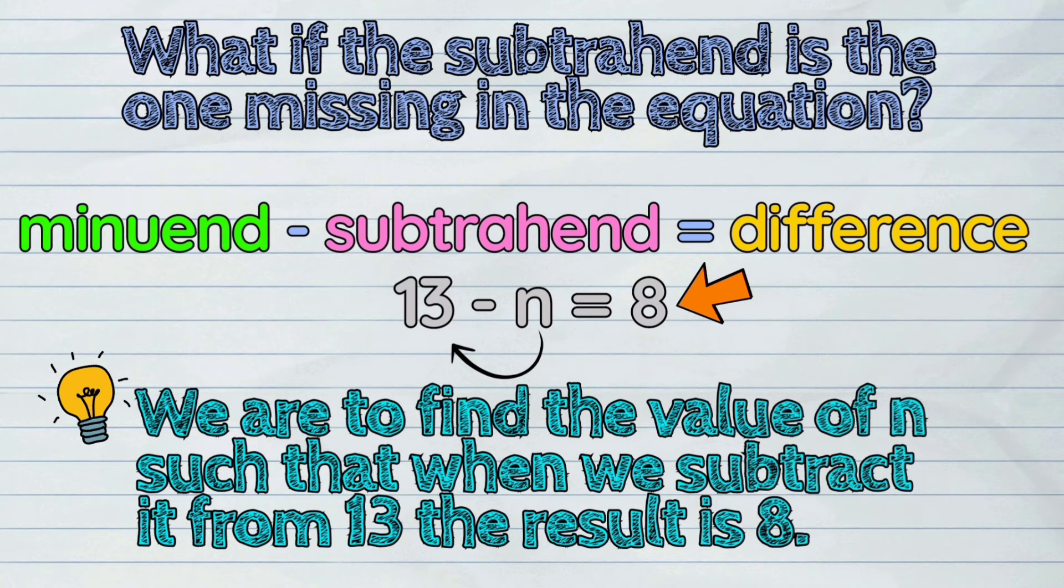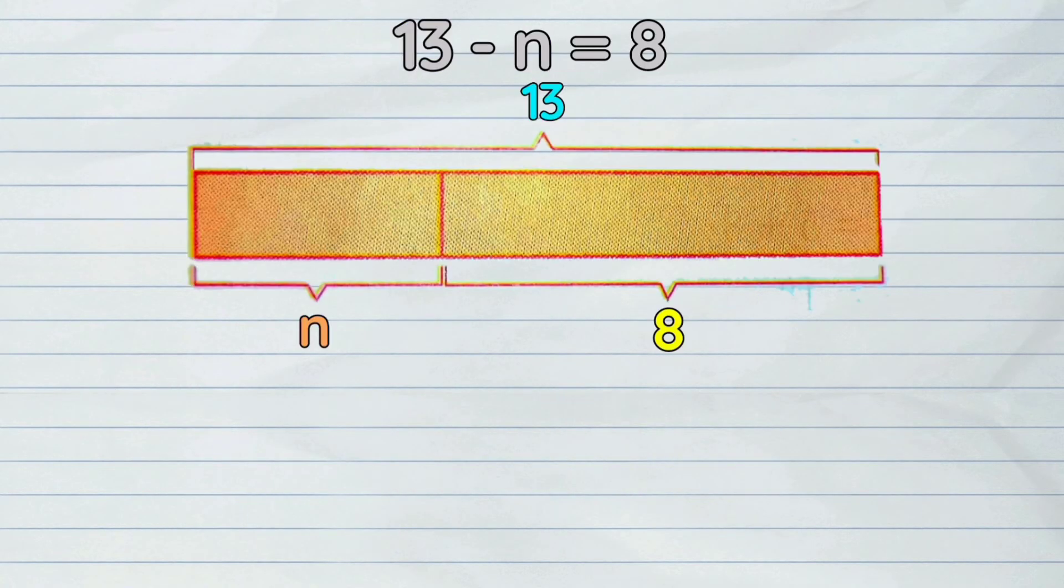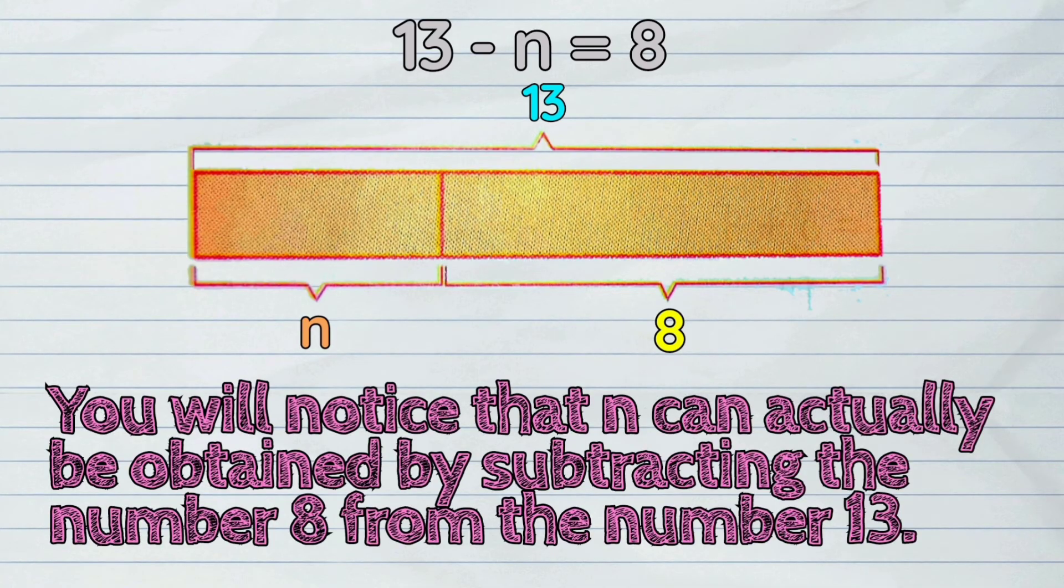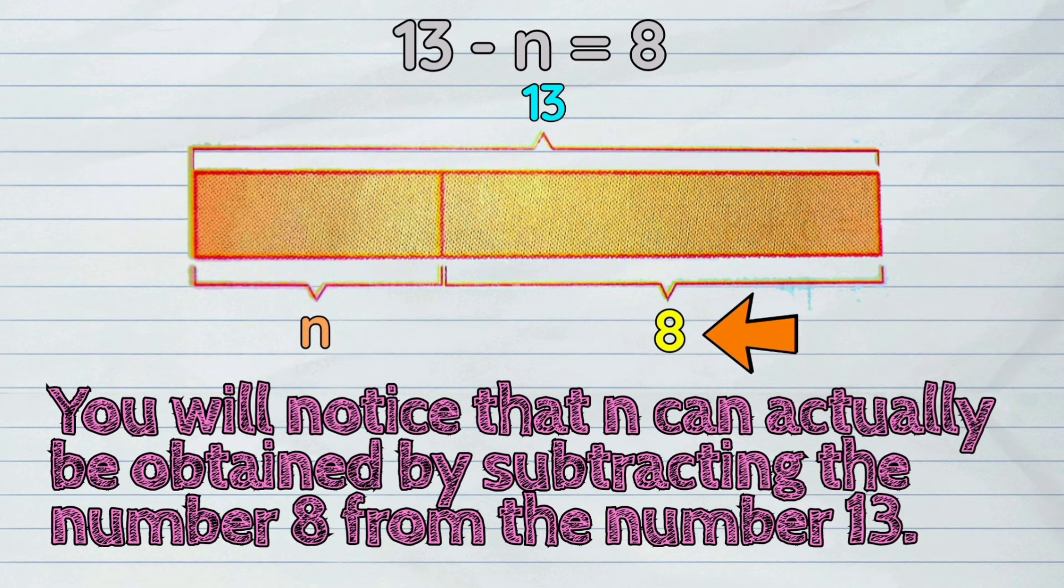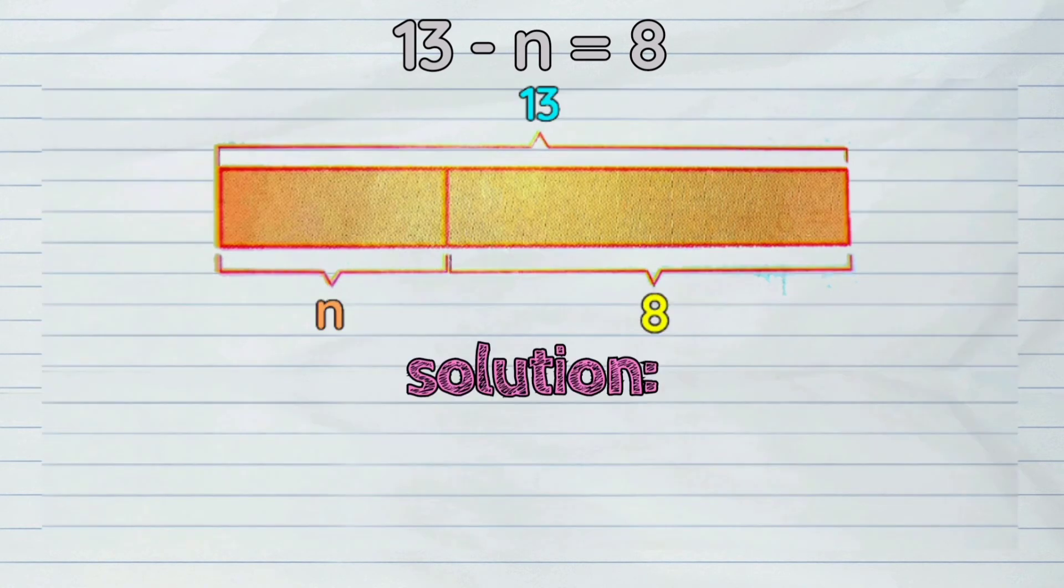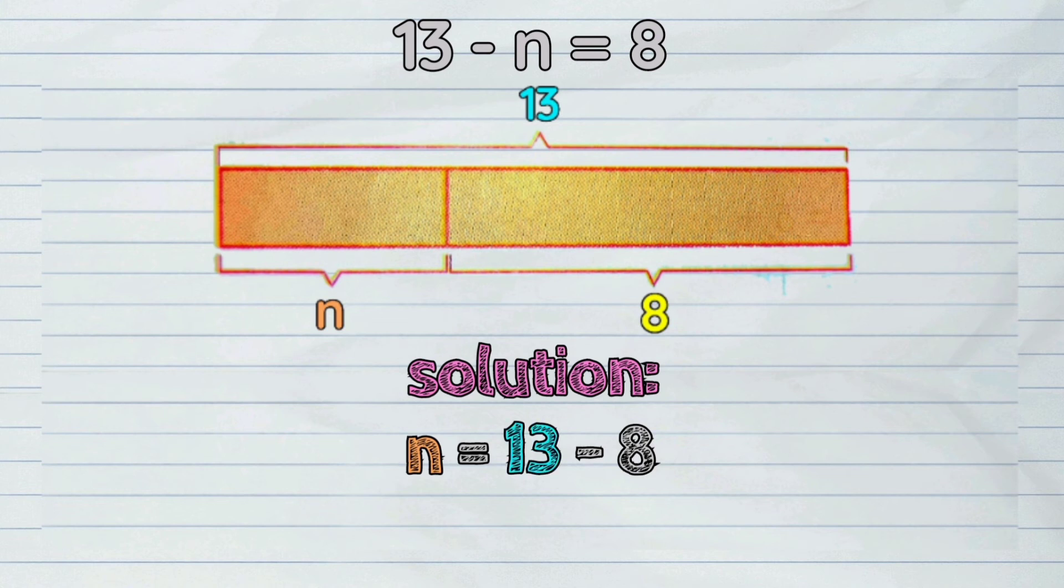Take a look at this visual representation. You will notice that n can actually be obtained by subtracting the number 8 from the number 13. Here is the solution: n equals 13 minus 8. The answer here is 5.